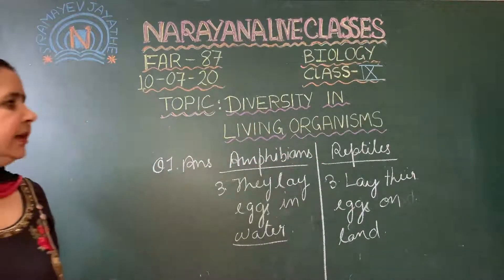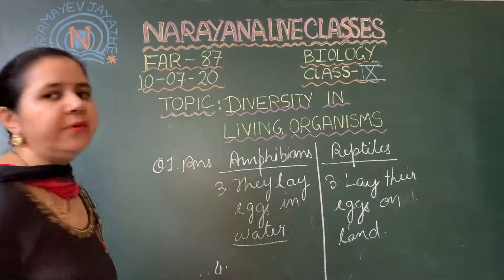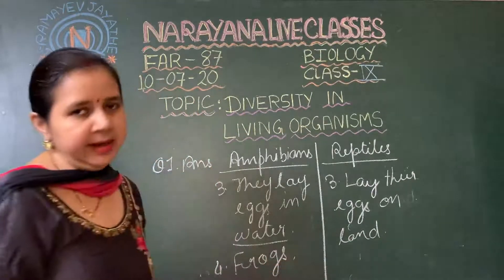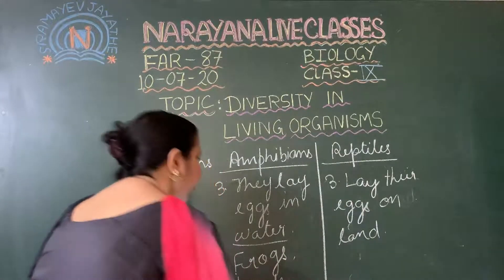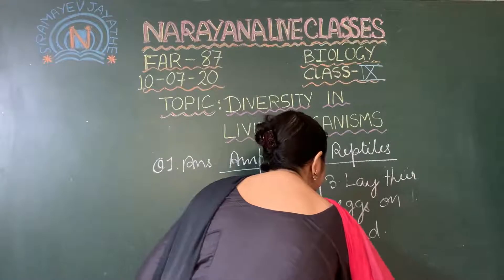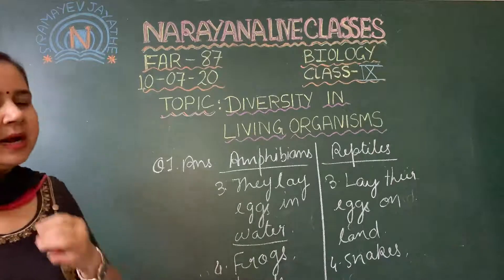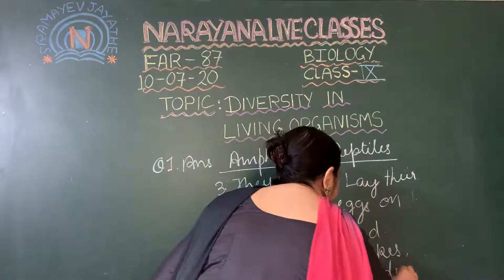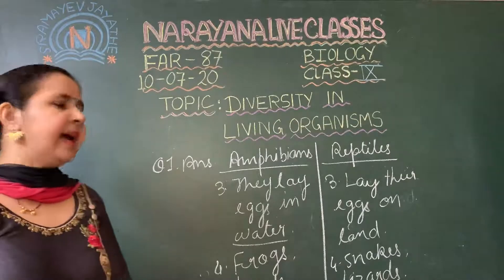The last point of difference is the examples. The examples of amphibians are frogs, toads, and salamanders. The examples of reptiles are snakes, lizards, and crocodiles. So these are the basic differences between amphibians and reptiles.